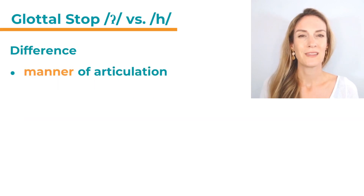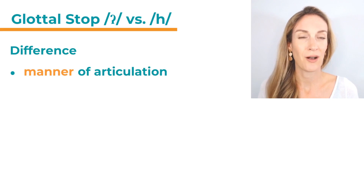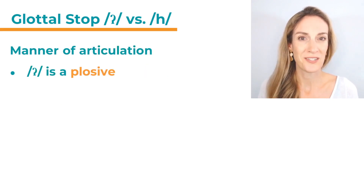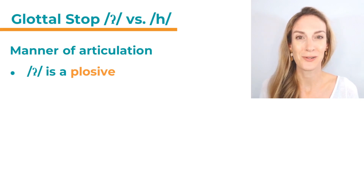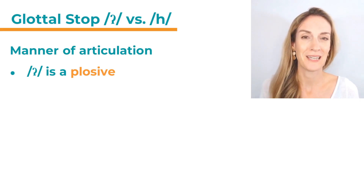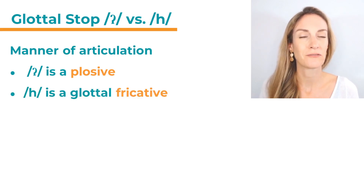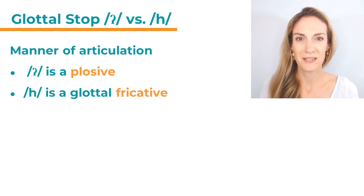The main difference really is the manner of articulation. The glottal stop is a plosive — the name says it all. It's called 'glottal stop' and another word for stop is plosive. And h is a glottal fricative — the voiceless glottal fricative. So one is a plosive and the other one a fricative.